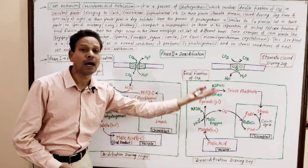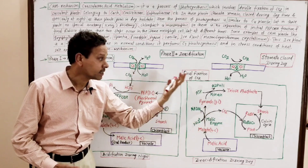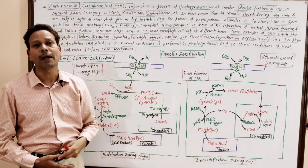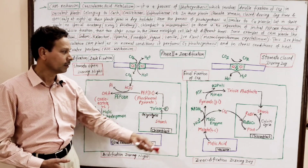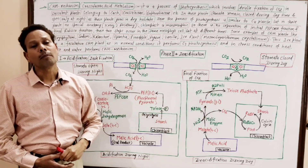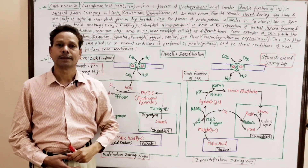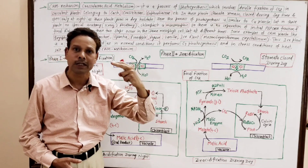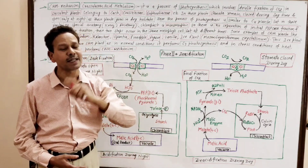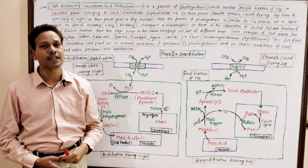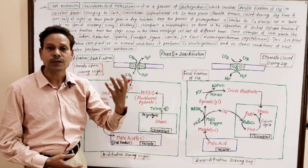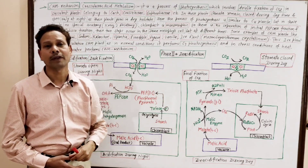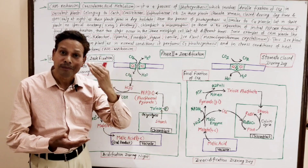While in CAM plants — including Crassulacean acid metabolism plants, succulent cactus, Euphorbia, Opuntia, and pineapple — the chloroplast is monomorphic, meaning only one type of chloroplast. But in the case of C4 plants, the chloroplast is dimorphic: two types — one in mesophyll cells and a second type in bundle-sheath cells. In CAM plants, only one type of chloroplast is present in mesophyll cells.